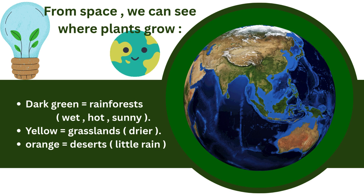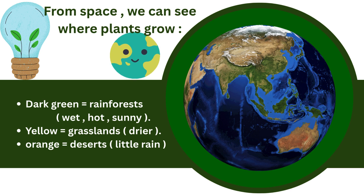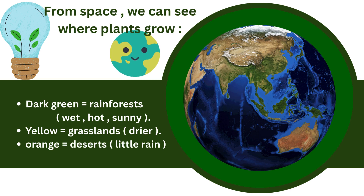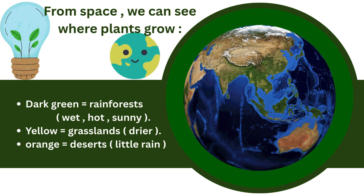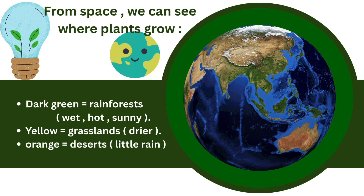As you can see on this diagram of Earth, the dark green patches are the rainforests, the yellow for the grasslands, and orange for the desert. Flowering plants are all around us in different shapes and sizes — they make our planet look colorful and beautiful. The different colored patches show where different plants grow depending on rainfall.